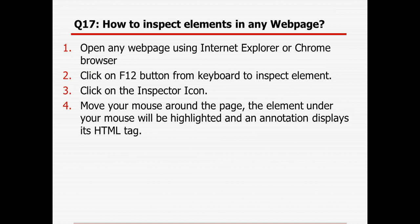How can we inspect elements in a web page? To find the id, name, class, tag name, or create your own XPath or CSS, first open any web page using Internet Explorer or Chrome. Then hit the F12 button from your keyboard — there will be an inspector icon. Click on that icon and move your mouse around the page. Place the cursor on the element whose attributes you want to find. All the annotations will be displayed for that element, and you can identify the ID, name, class name, or tag, or create your own XPath.